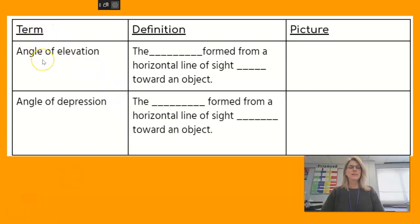On our vocabulary, the angle of elevation is the angle formed from a horizontal line of sight up toward an object. Draw a picture with a horizontal line, then draw an object above that line and draw an arrow going up. This is the angle of elevation because it's from the horizon going up.